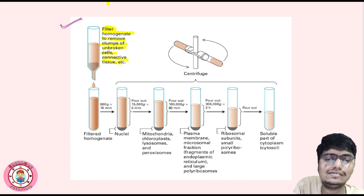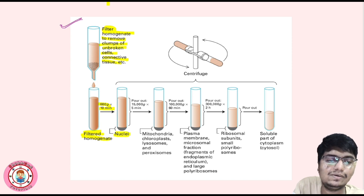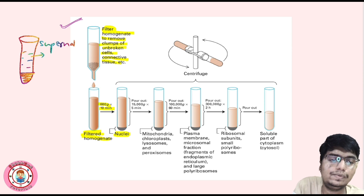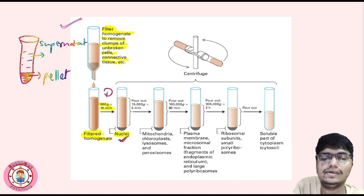Using this filtered homogenate, we will do the centrifugation — differential centrifugation at different speeds. First is 600 gravity for 10 minutes. We get nuclei in the pellet — nuclei will settle down. This is a tube; the pellet is at the bottom and the fluid above is called the supernatant.